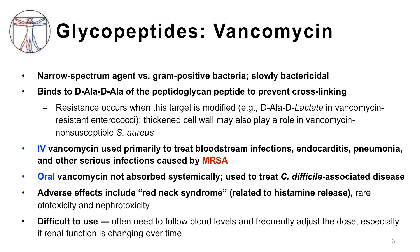Please review the beta-lactam videos to remind yourself how this mechanism of action differs from that of the beta-lactams. However, you'll note that the end result is the same — peptidoglycan synthesis is blocked. IV vancomycin is primarily used to treat bloodstream infections, endocarditis or heart valve infection, pneumonia, and other serious infections caused by MRSA.